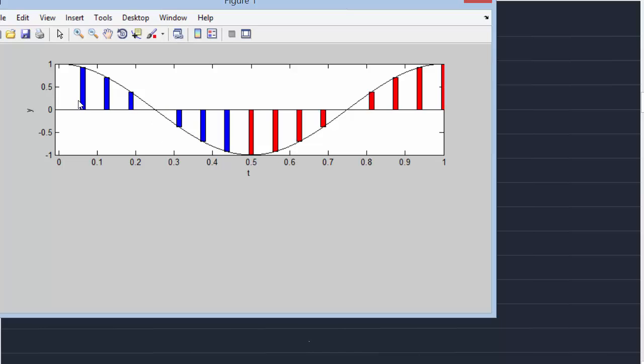If you add all the blue bars together, that will sum to 0. Likewise, if you add all the red bars, that will also sum to 0.